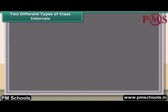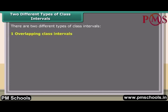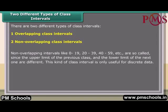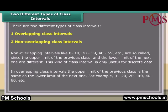There are two different types of class intervals. First, overlapping class intervals. Second, non-overlapping class intervals. Non-overlapping intervals like 0 to 19, 20 to 39, 40 to 59, etc., are so called since the upper limit of the previous class and the lower limit of the next one are different. This kind of class interval is only useful for discrete data. In overlapping class intervals, the upper limit of the previous class is the same as the lower limit of the next one — for example, 0 to 20, 40 to 60, etc.